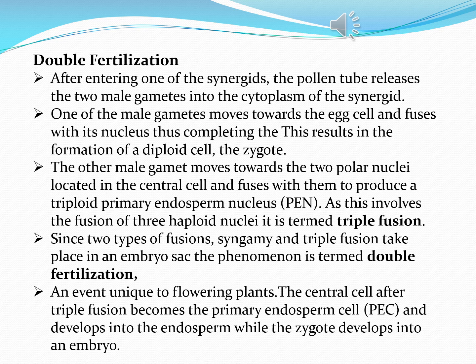One male gamete moves towards the egg cell, or oosphere, and fuses with the egg nucleus. This process is called syngamy. A diploid cell is formed, and that structure is also called a zygote. So one male gamete moves towards the egg cell, fuses with the egg nuclei, forms syngamy, and is diploid in nature — forming the zygote.